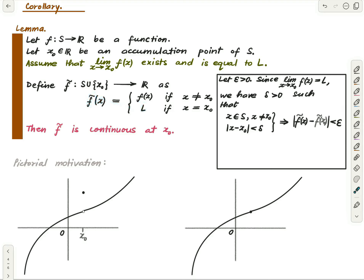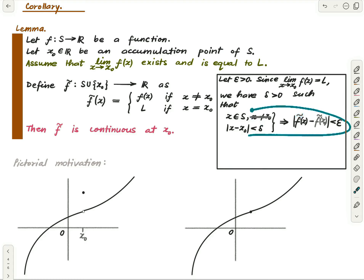What happens at x equals x₀? If x equals x₀ then |f̃(x) − f̃(x₀)| is zero, so the inequality is clearly true, and we can delete the condition that x ≠ x₀. We have found a delta that witnesses the epsilon-delta criterion for the continuity of f̃ at x₀. This proves the continuity of f̃, and we did not even have to go to an extra page.